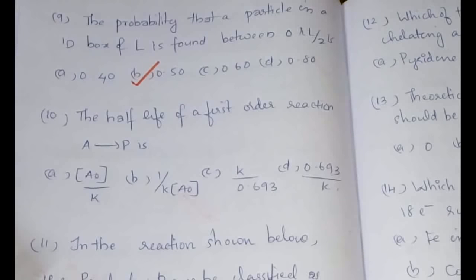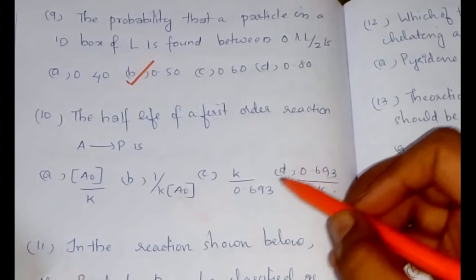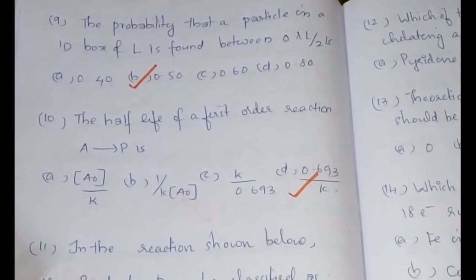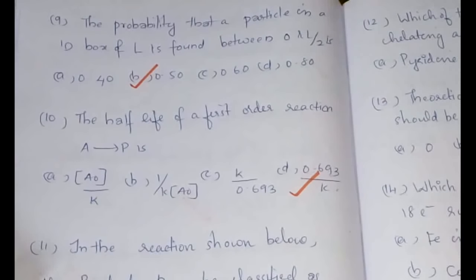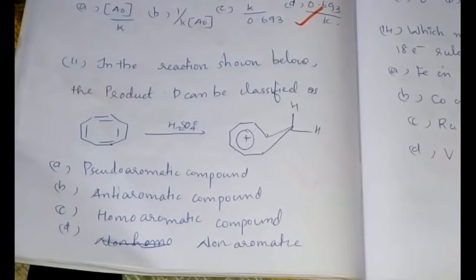The next question you must answer because the half-life of a first-order reaction is something that you are learning always. You have learned from your plus two onwards, so the half-life of a first-order reaction is equal to 0.693 divided by K, where K is the rate constant.